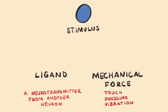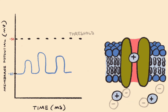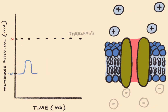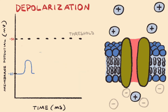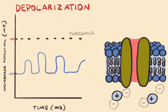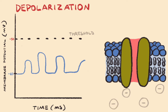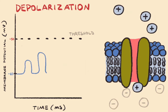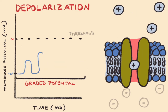For example, touch, pressure, or vibration. The stimulus will cause a small deviation from resting membrane potential as ions move into the neuron through specific ion channels. If the ions moving in are positive, then this will lead to depolarization — the inside becoming less negative and the neuron becoming increasingly excited. The small deviation from resting membrane potential is called a graded potential, which will increase in size as the stimulus size increases.